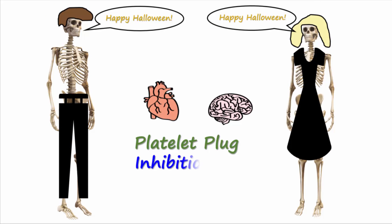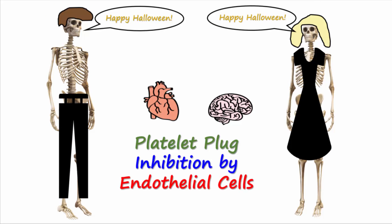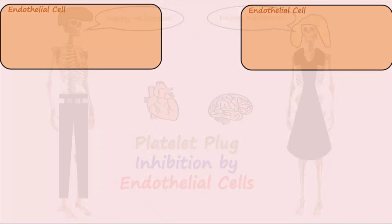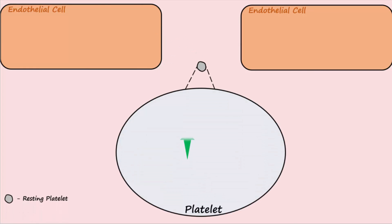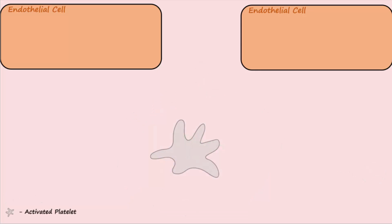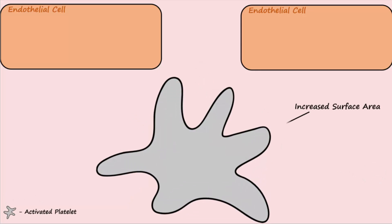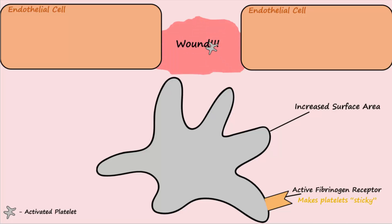Today let's discuss platelet plug inhibition by endothelial cells. Inside platelets, increased calcium acts as a second messenger to cause exocytosis of platelet granules and platelet activation. Activated platelets have increased surface area and express active fibrinogen receptors, which makes the platelets stick to one another. In case of a wound, this allows the platelets to form a platelet plug to help stop blood flow.